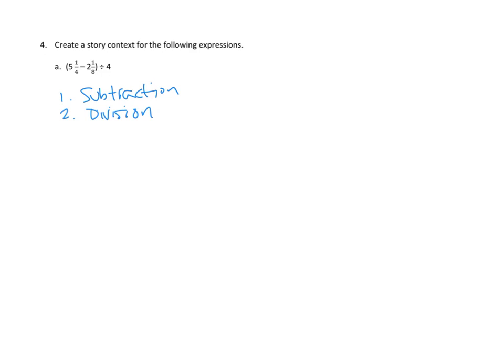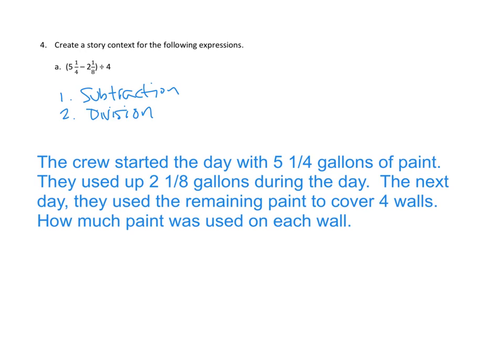Okay, so we have to come up with a problem where we start by subtracting these two numbers, and then we take what's left over of that, and we do division. I'm going to go ahead and switch to a text tool here and sort of type mine out. What should we do? Well, these are kind of fractions. I think we're going to use paint as my example. The crew started the day with 5 and 1/4 gallons of paint. They used up 2 and 1/8 gallons during the day. The next day, they used the remaining paint to cover four walls.